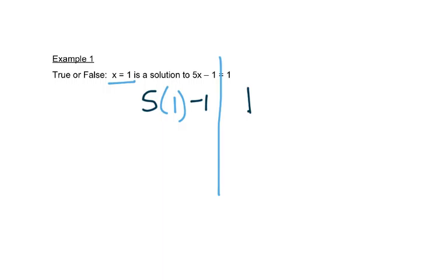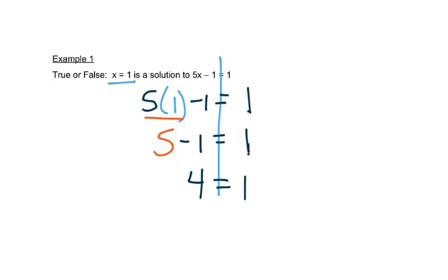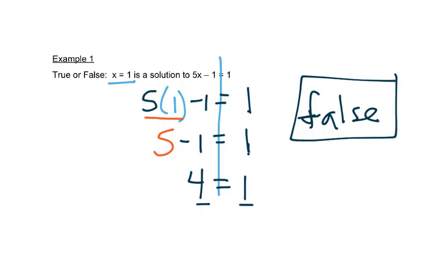Let's see what happens when we follow our order of operations. We have 5 times 1 is 5, and we still have a 1 on the right. We're still trying to see if this is really equal. On the left hand side we have 5 minus 1 is 4. If it's a solution, those two sides should be the same, but clearly 4 and 1 are not the same — they're not equal to each other. So this is false. x equals 1 is not a solution because it doesn't make a true statement.